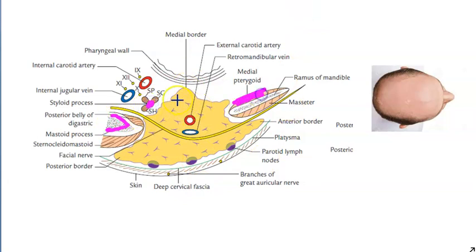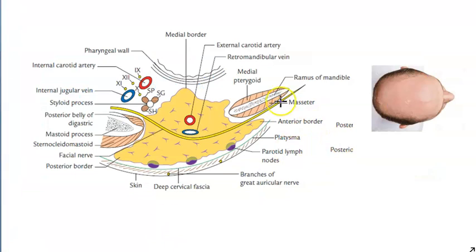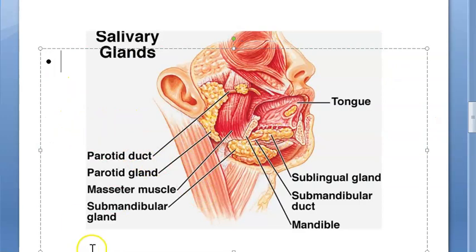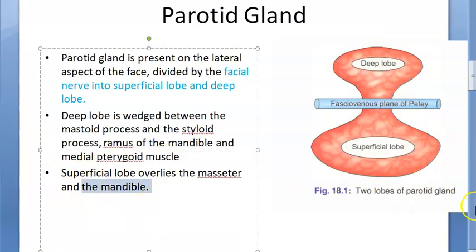The deep parotid lobe sits between the mastoid process, styloid process, and medial pterygoid muscle. The superficial lobe overlies the masseter muscle and the mandible. As you can see in the diagram, the parotid gland is largely superficial, with the parotid duct visible, and the masseter muscle marked below.